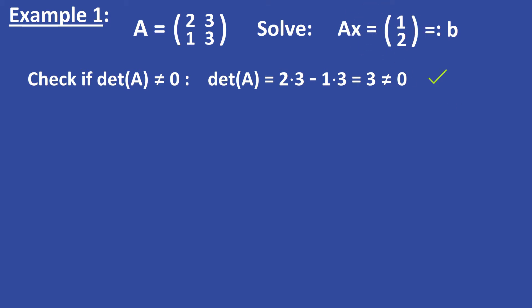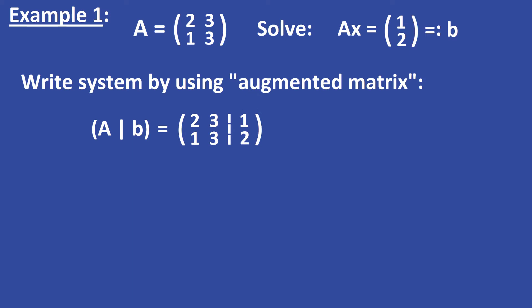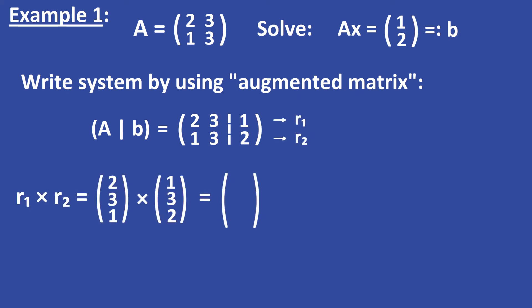Now we rewrite this linear system by using an augmented matrix. On the left is the matrix A and on the right is the vector B. Now we have to take the cross product of the rows of this matrix — this is row 1 and this is row 2.